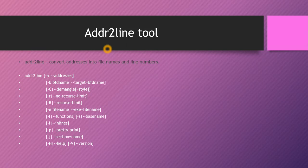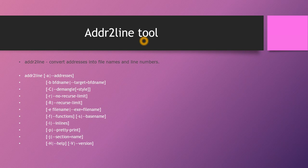That is why we use a tool called addr2line, which converts addresses into file names and line numbers. When we are given a particular set of logs and we are not able to determine in which line number and file the issue is seen, we use this addr2line tool. It converts the addresses generated in tombstone logs into a file name and line number so we can easily go to that file, that function, that line number, and fix the issue.